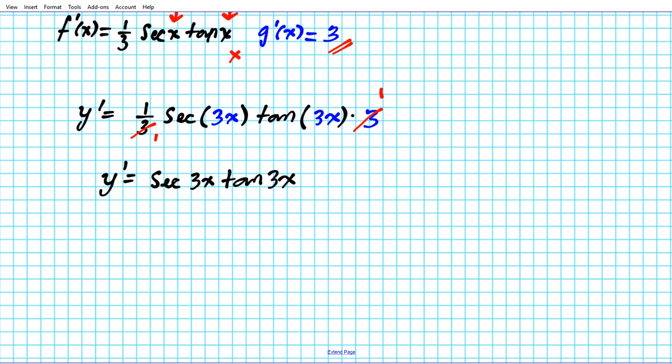Okay, so that's basically how you differentiate y equals 1 over 3 cosine 3x.